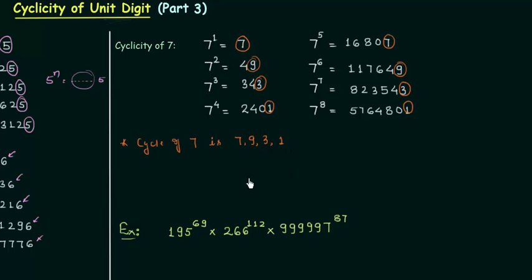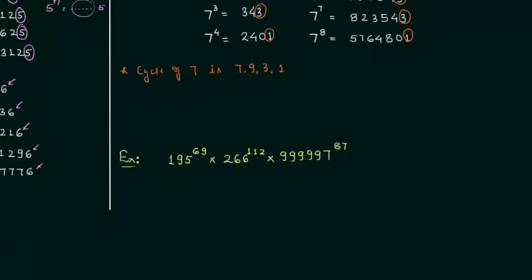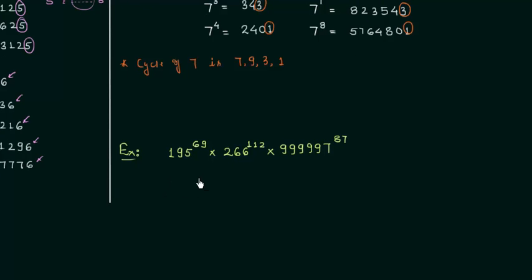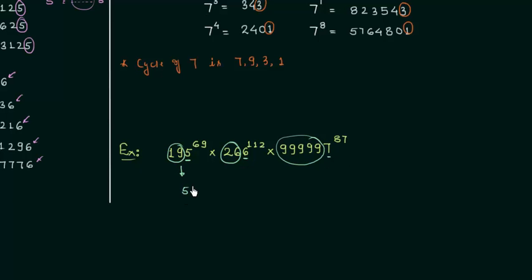There are 4 digits in this cycle. Now we will move to an example that includes cyclicity of 5, cyclicity of 6, and cyclicity of 7. We will focus on the unit digit. From 195 we neglect 19 and keep 5; from 266 we neglect 26 and keep 6; and from the third number we keep 7. So we have 5 raised to power 69, multiplied by 6 raised to power 112, multiplied by 7 raised to power 87.